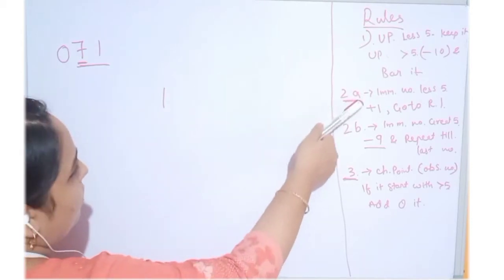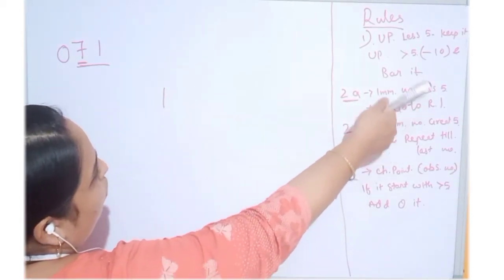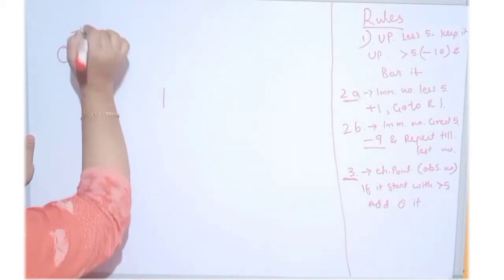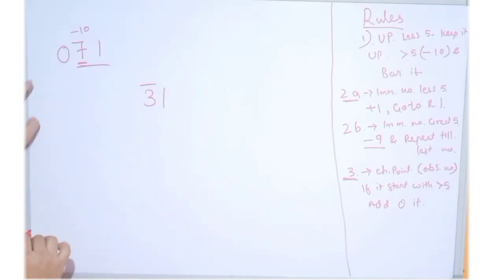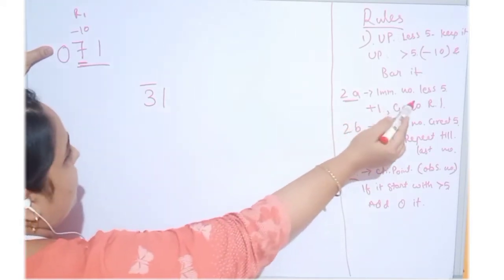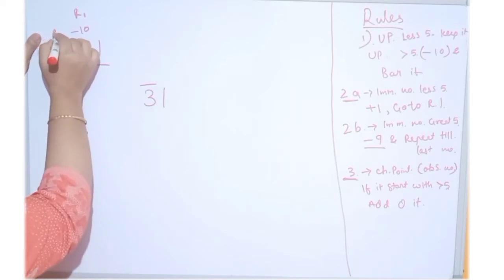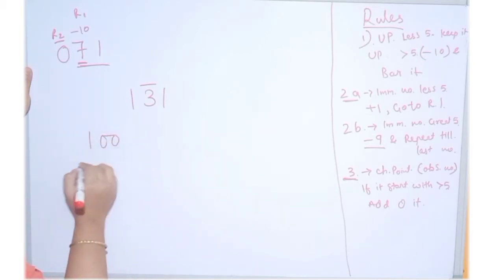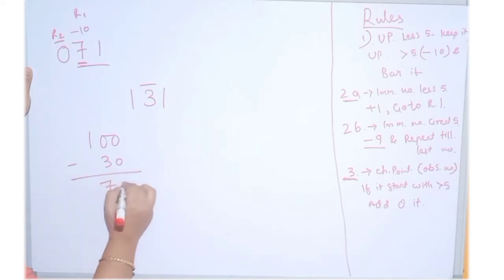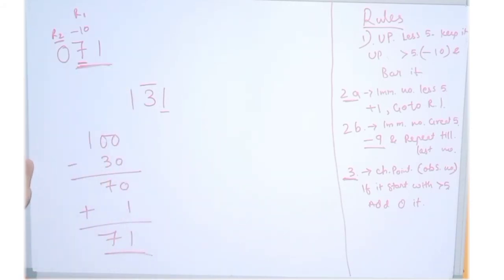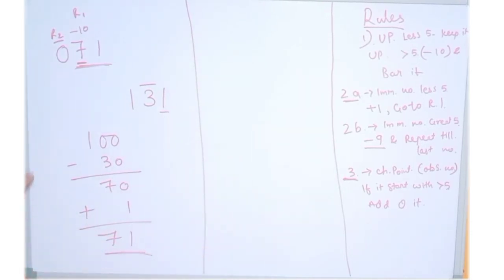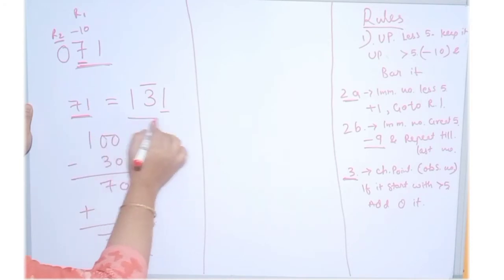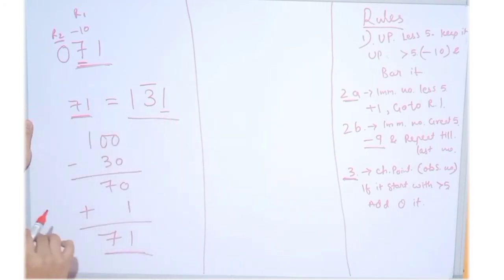Now for the digit 7 — go to Rule 1 again. Subtract from 10, we get 3 bar. Rule 1 is implemented. Time to implement Rule 2. The next digit is 0, which is less than 5, so we add 1 to it — Rule 2A. So we get 100 minus 30 equals 70, then add 1 more. Answer is 71. So positive 71 converts to 1, 3 bar, 1 in Vinculum number.